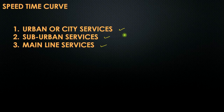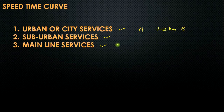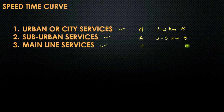We should differentiate what are urban, suburban, and mainline services. In urban services, the distance between station A and B is almost 1 to 2 km. In suburban services, the distance between point A and B ranges from 2 to 5 km. And in mainline services, the distance between stations A and B ranges from 10 to 50 km or higher.